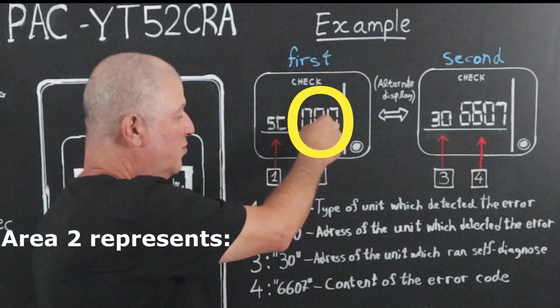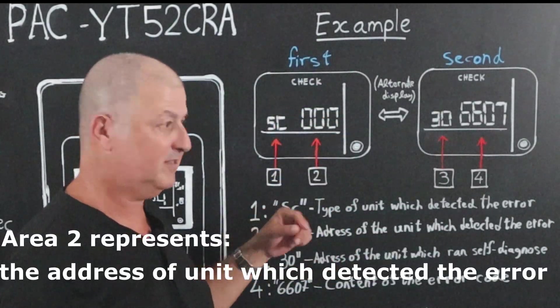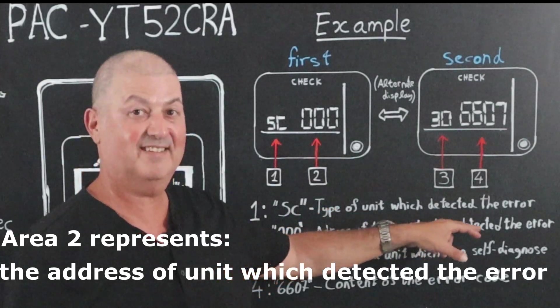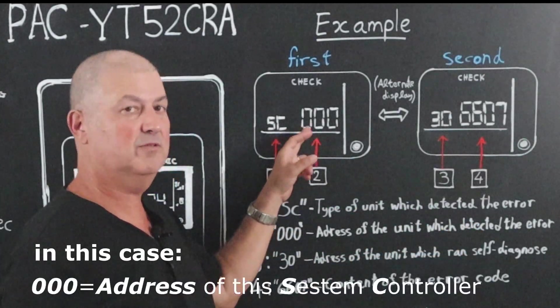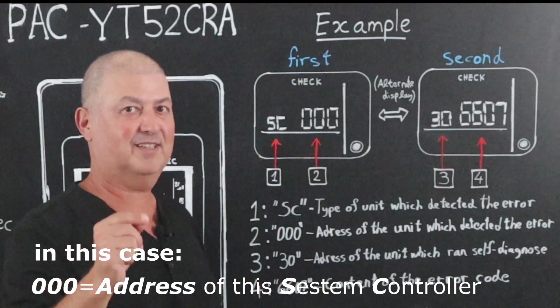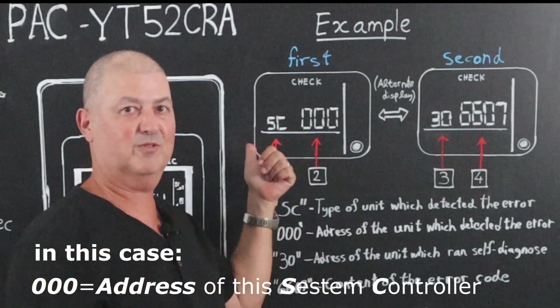Area 2 represents the address of the unit which detected the error. In this case, 000 is the address of this system controller.